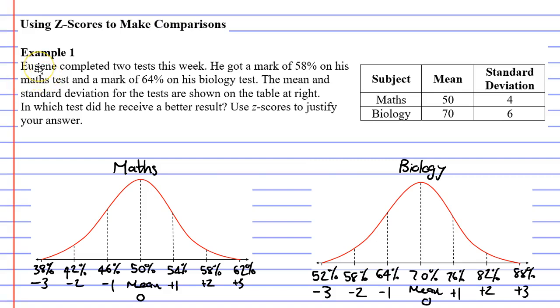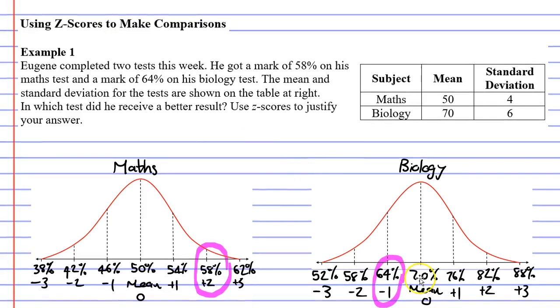Now let's look at Eugene's marks. He got a mark of 58% on his maths test. Let's mark that on the bell curve. 58% has a z-score of positive 2. It's two steps, or two standard deviations, above the mean. In biology, he got a mark of 64%. 64% is actually below average. It's one step below the mean, or one standard deviation below the mean. So we can see that he's done better in maths, because he has a better z-score.